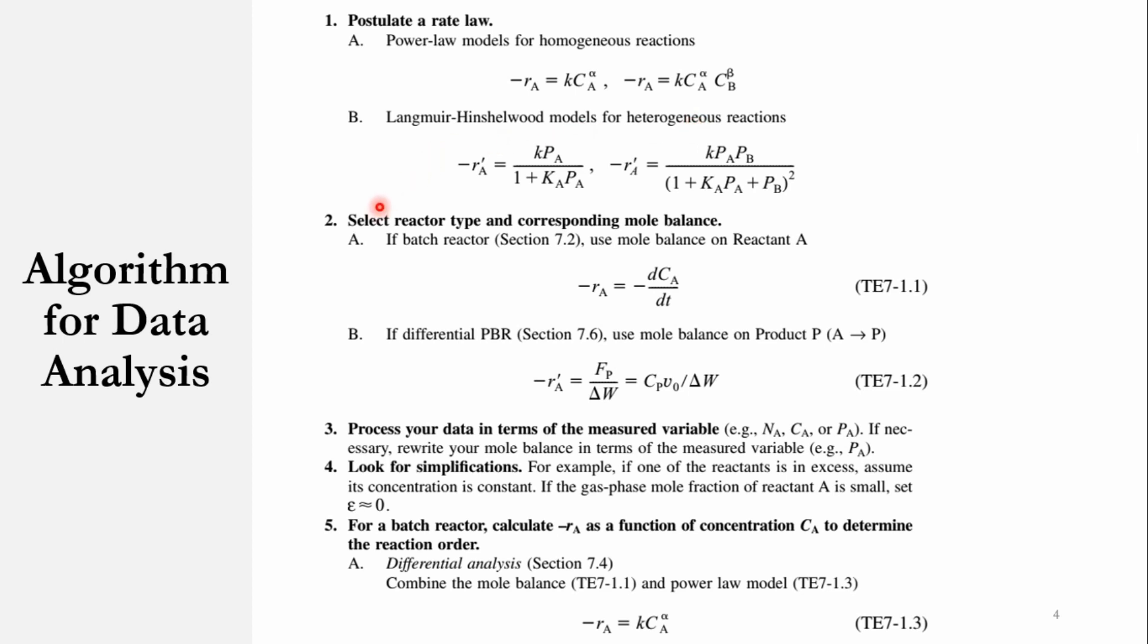Number 2: we have to select the reactor type and corresponding mole balance. If it is a batch system, we will select the suitable batch reactor equation. For batch system, we can say -rA = -dCA/dt. And if it is a differential, then -r'A = FA0·dX/dW, and that is equal to concentration times volumetric flow rate divided by delta W.